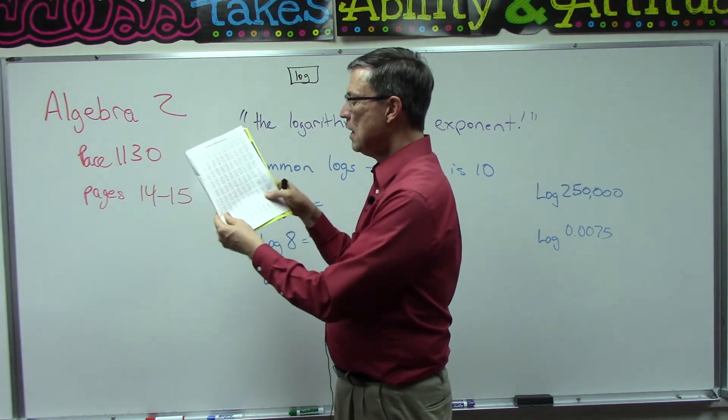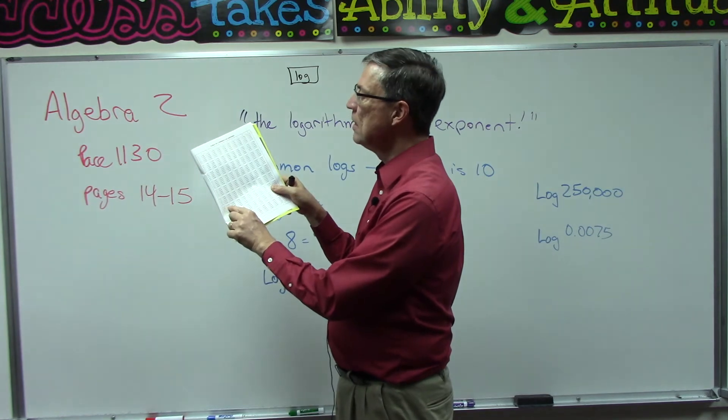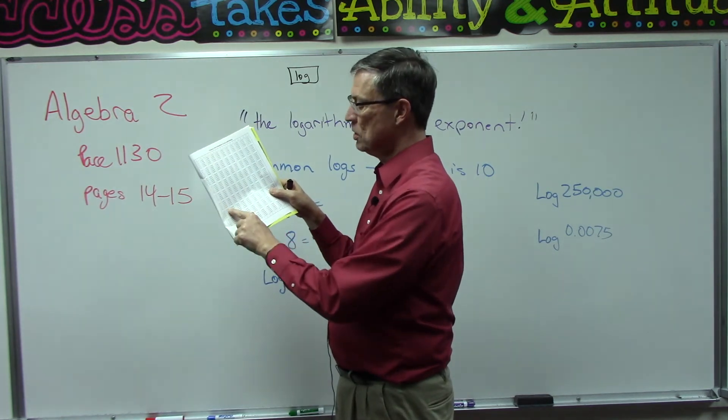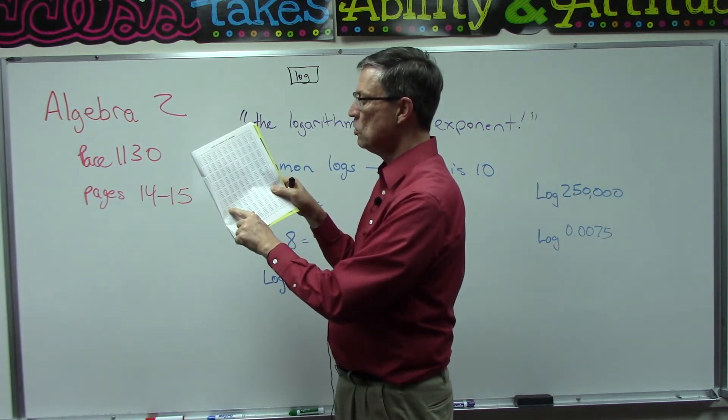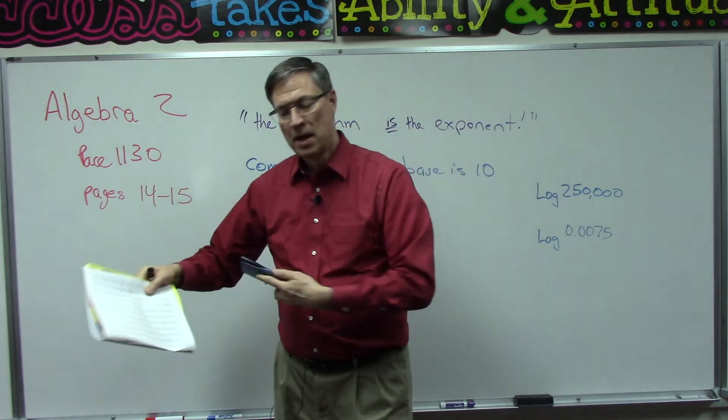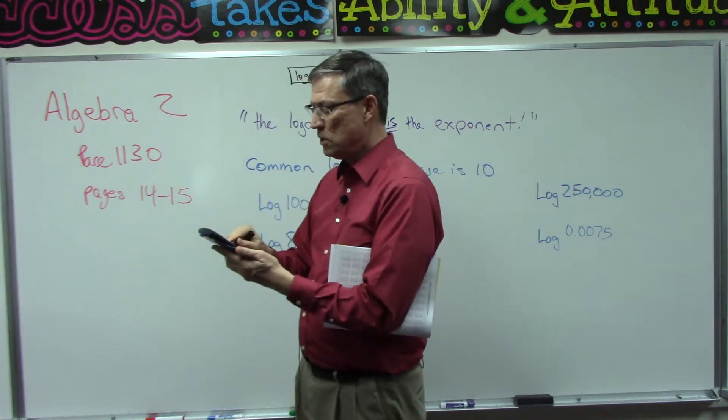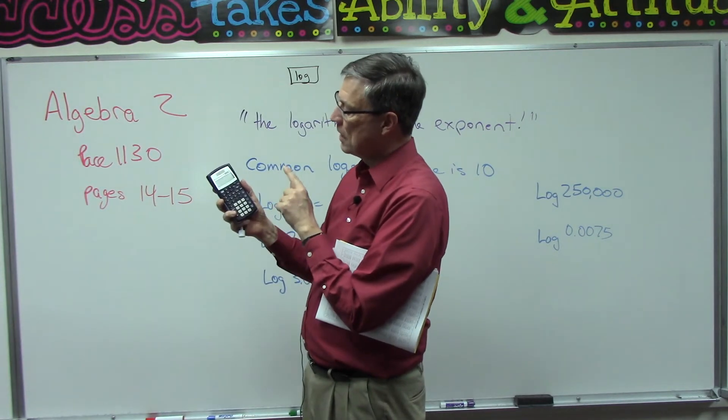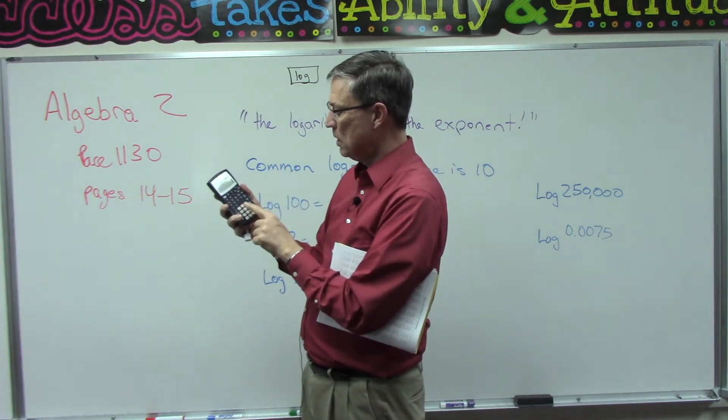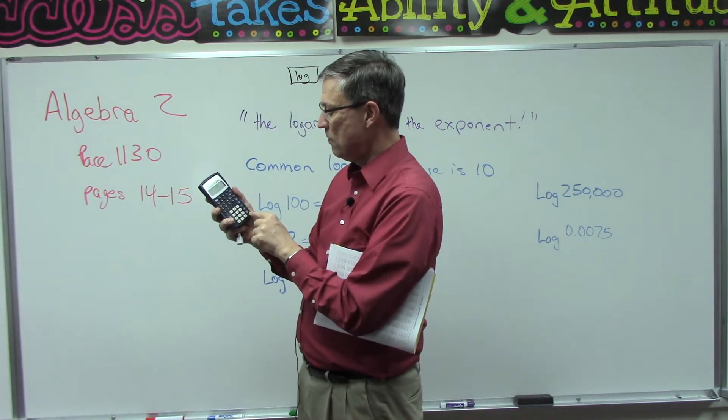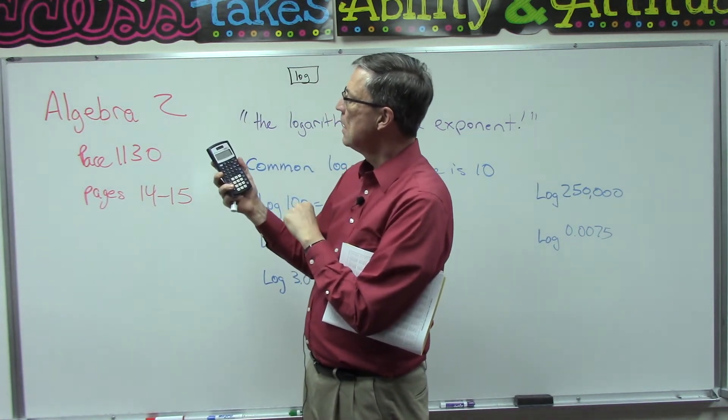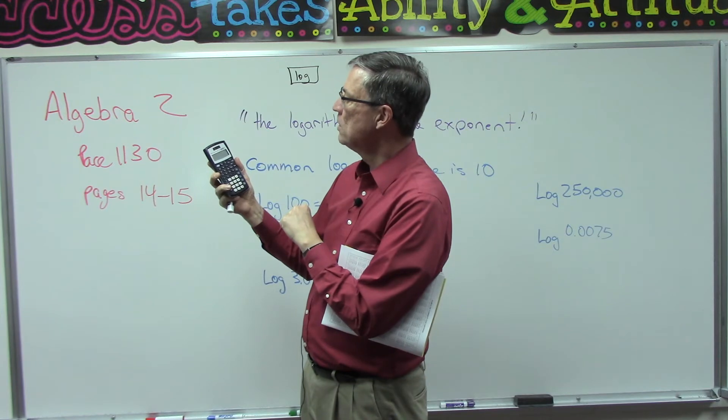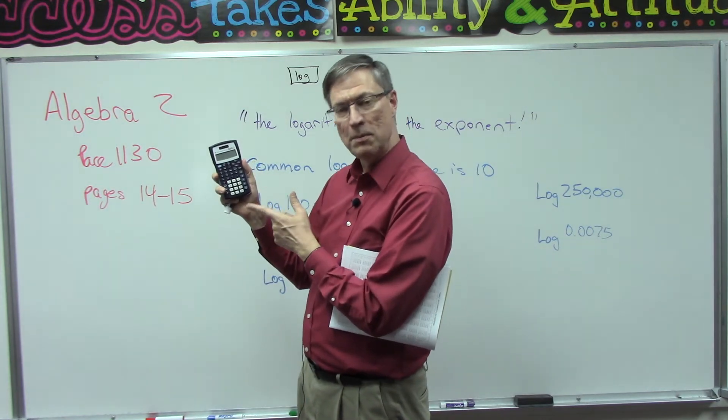If you go to the very back of the pace you find the table of common logarithms and you look up 8.5 and then if the second digit is just a zero then you just take the 0.9294. But I want to show you if you take your calculator, on this calculator I hit log first and then it gives me a parenthesis so I'm going to put in 8.5.